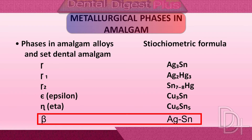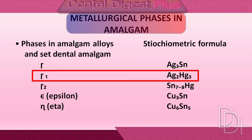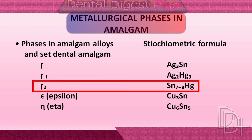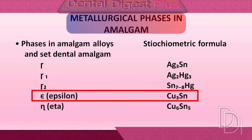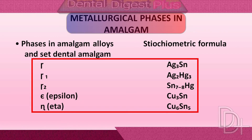Silver and tin form the beta phase. Silver and tin also form the gamma phase. Silver and mercury form the gamma-1 phase. Tin and mercury form the gamma-2 phase. Copper and tin form the epsilon phase. Copper and tin also form the eta phase. You have to remember all these phases for understanding the setting reaction.